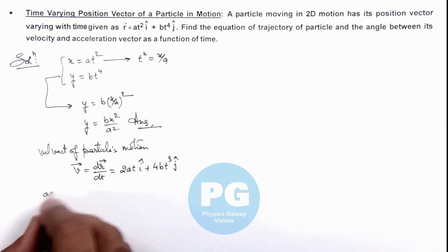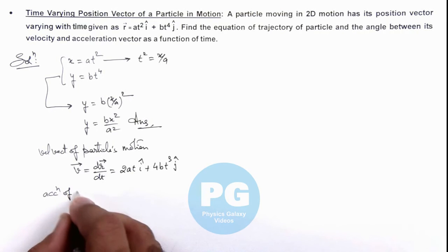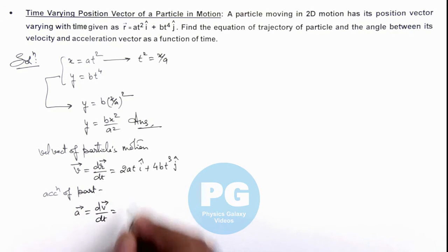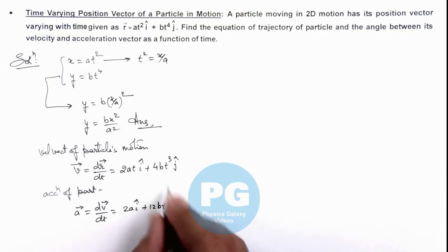Similarly, we can calculate the acceleration vector of the particle as a⃗ = dv⃗/dt. Further differentiating this expression, we are getting 2aî plus 12bt²ĵ.